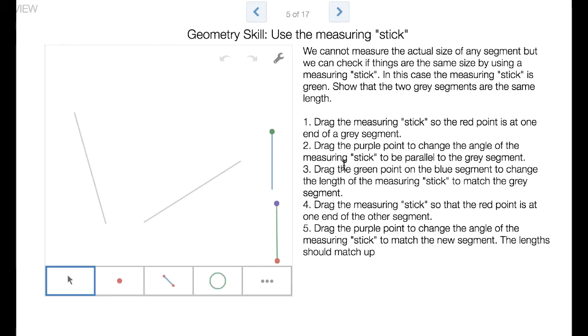In Desmos geometry, there are no measurement tools, so we've created something here where they can use this as a measuring tool. The red point is a point that you rotate around. To measure the length of something, they line it up with the red point on one end and then drag this green point to change its length. They get a relative size there, and then they can move it over to the other segment. Just by rotating it, they can see that they're the same length.